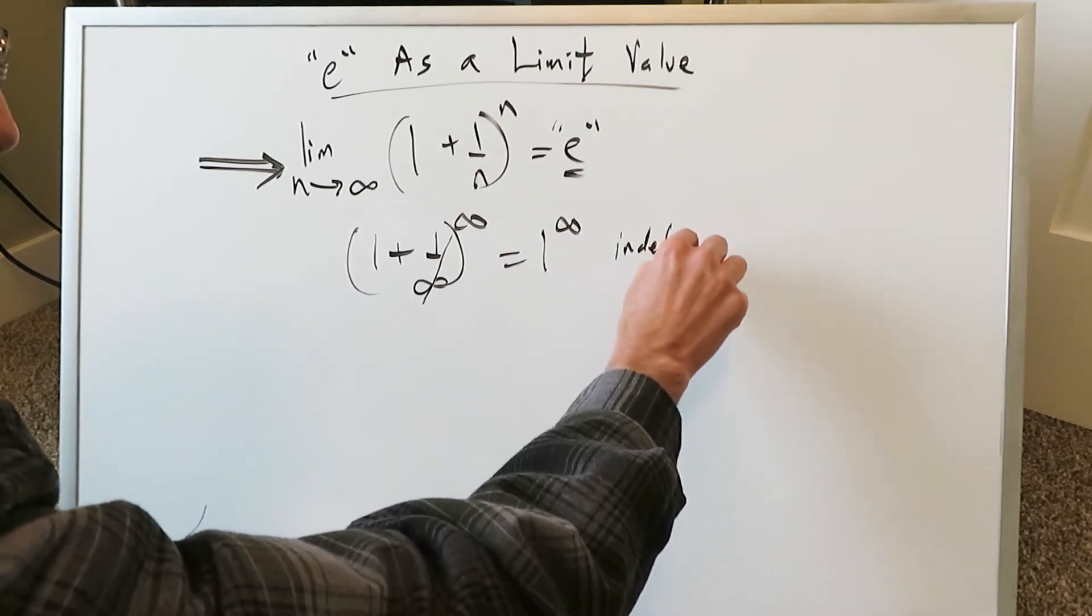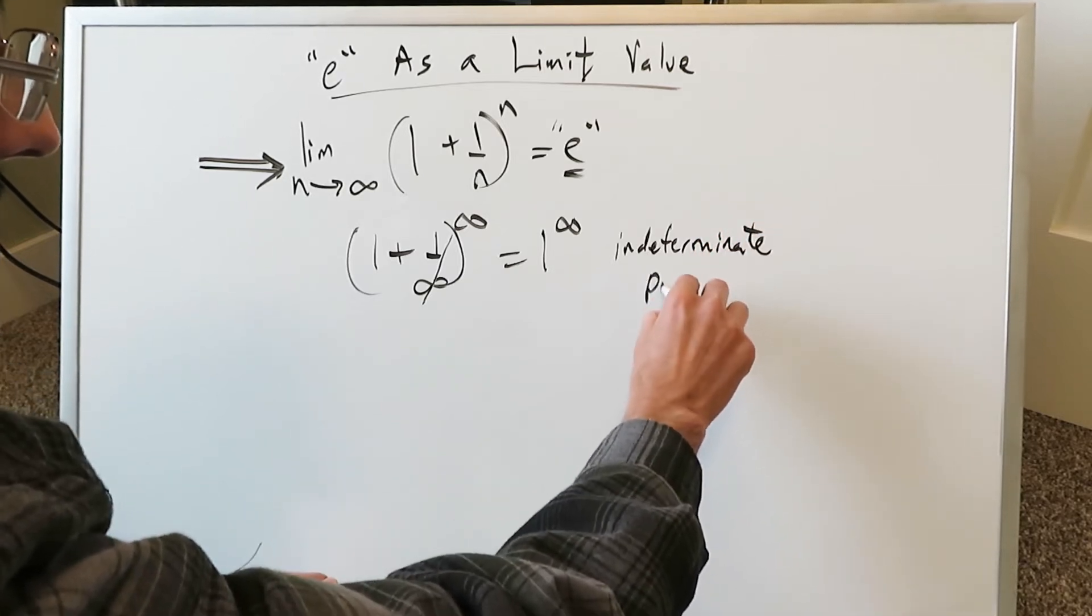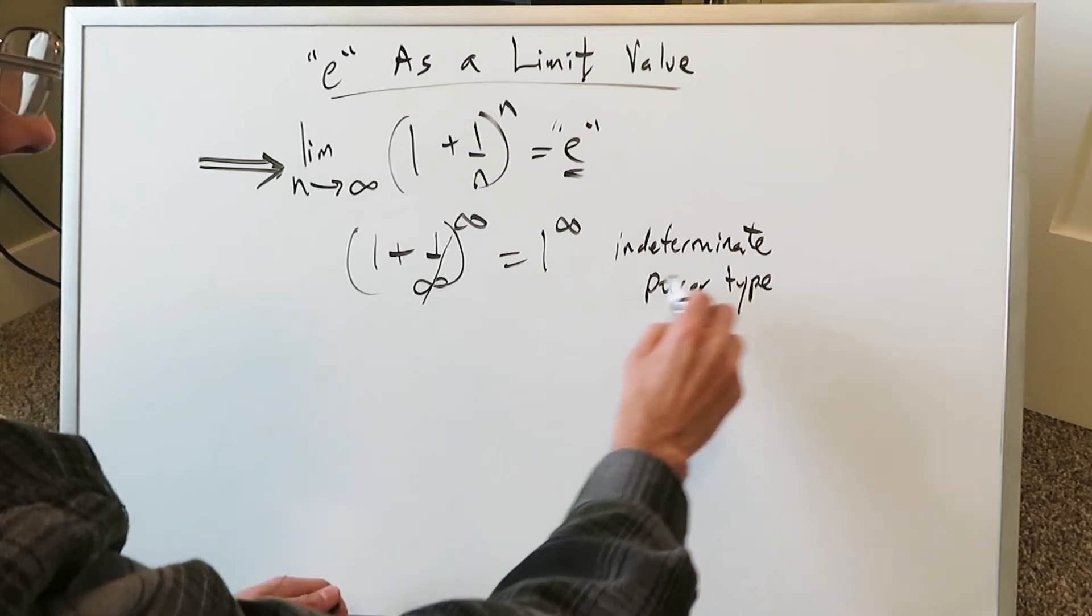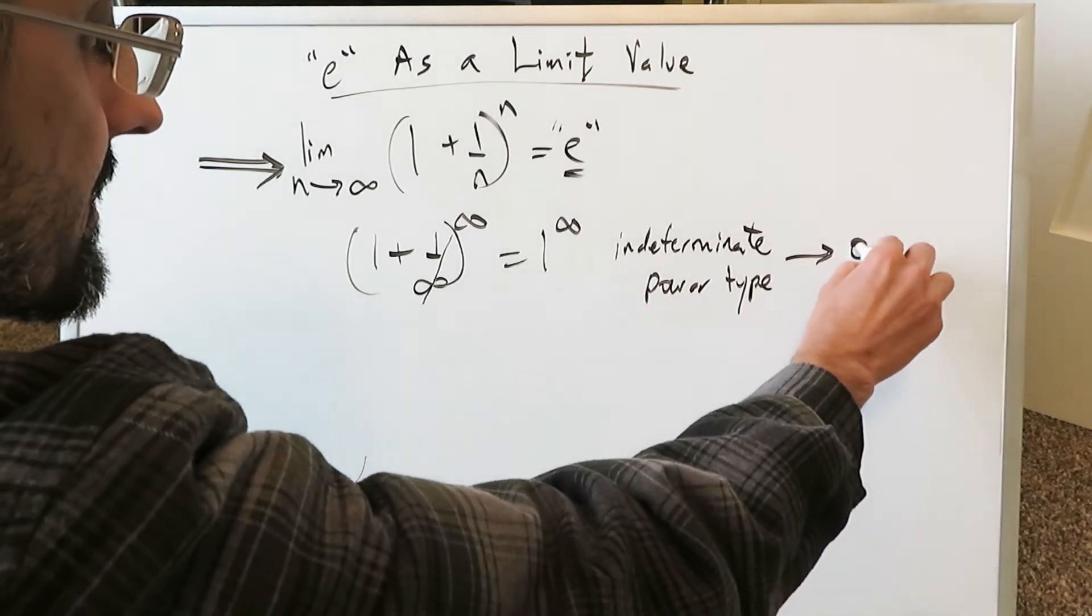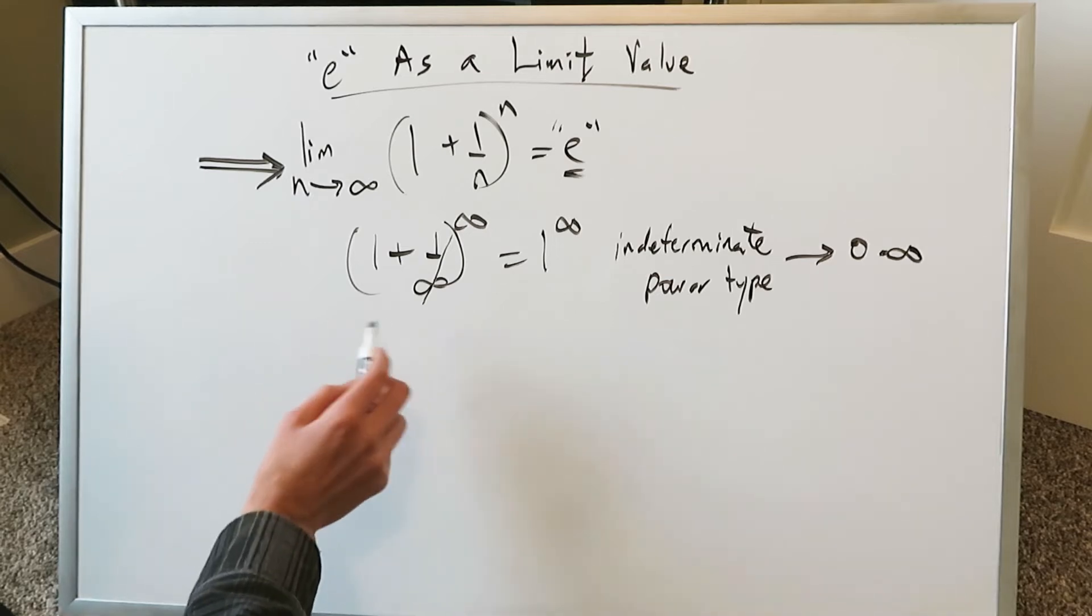Which here is an indeterminate. And you remember this from your limits classes indeterminate power type. When you have an indeterminate power type, your goal is to convert it into an indeterminate product type. And you can do that by utilizing natural log.